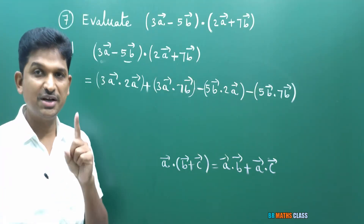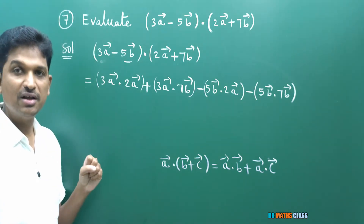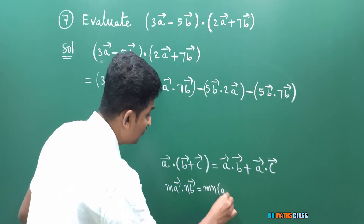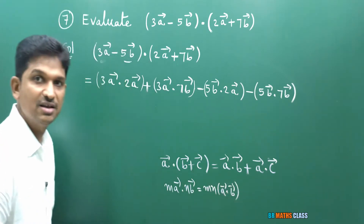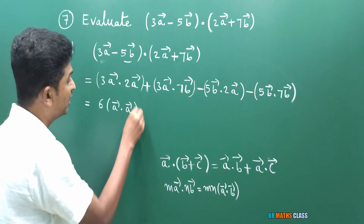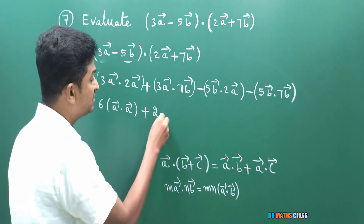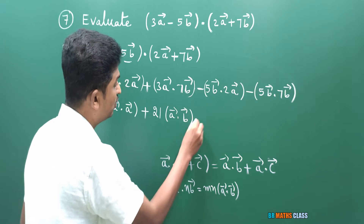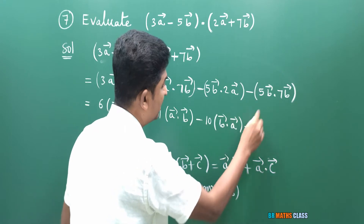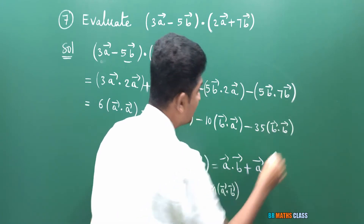We applied the formula: mA̅ · nB̅ = mn(A̅ · B̅). So 3A̅ · 2A̅ becomes 6(A̅ · A̅). Then 3A̅ · 7B̅ becomes 21(A̅ · B̅). Then minus 5 × 2 = 10 times (B̅ · A̅), minus 5 × 7 = 35 times (B̅ · B̅).